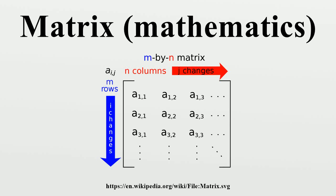In mathematics, a matrix is a rectangular array of numbers, symbols, or expressions, arranged in rows and columns. The dimensions of the matrix below are 2 times 3, because there are two rows and three columns.